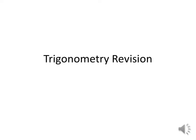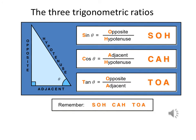This week we're revising trigonometry and we're going to be looking at using trigonometry to find the missing side or angle in a right-angled triangle involving two given sides. Looking at the angle theta, we have the right-angled triangle. The side opposite theta is called the opposite, the side next to the other angle is called the adjacent, and the hypotenuse is the longest side, which is also opposite the right angle.